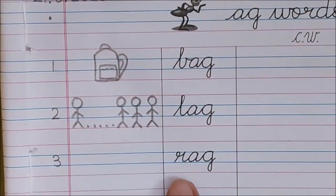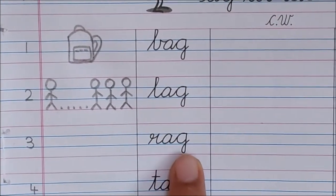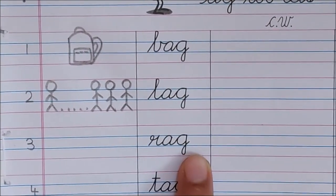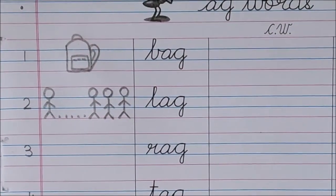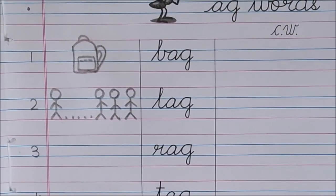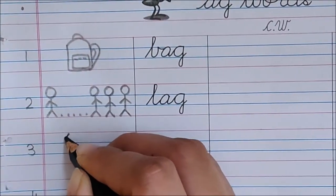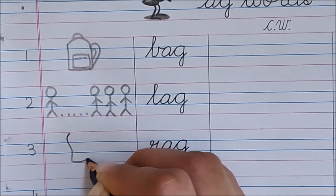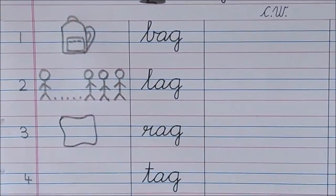Now let us read the next word. R, A, G, Rag. Rag means an old cloth which is used for cleaning or dusting. So let us draw here a rag. See, this is a rag.